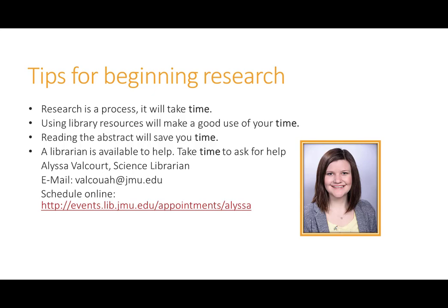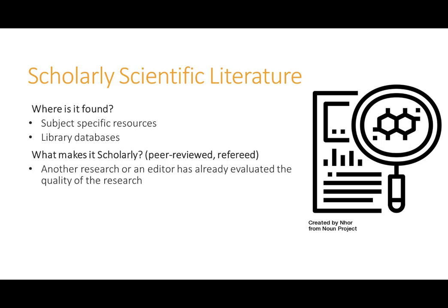Let's talk about what scholarly scientific literature is. Scholarly scientific literature can usually be found in subject-specific resources and databases that you can find through JMU libraries. This type of literature is often found in what you will hear called scholarly, academic, or peer-reviewed journals. These types of journals are created by and written for academics and researchers in that field. Scholarly journals require references, and each paper submitted has to go through a review process made up of experts in the field. The purpose of these journals is to share information out to the academic community.